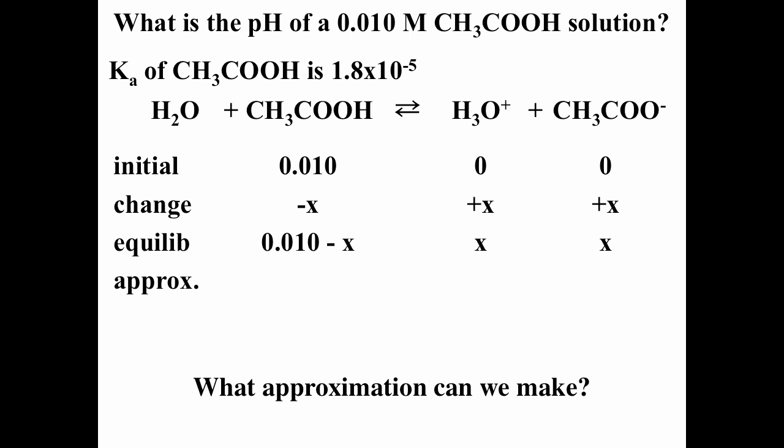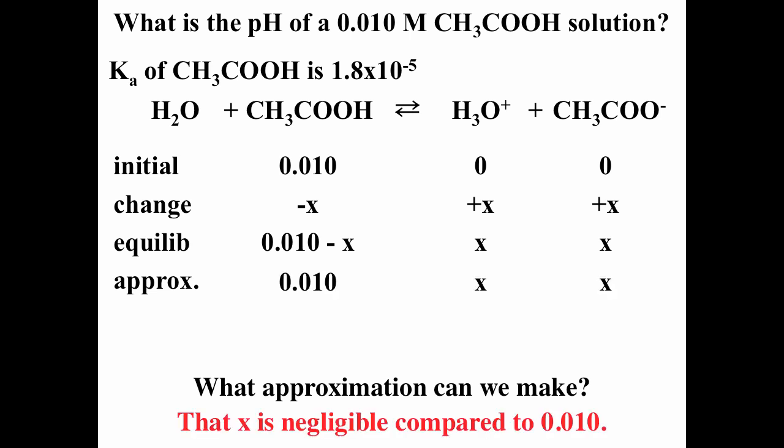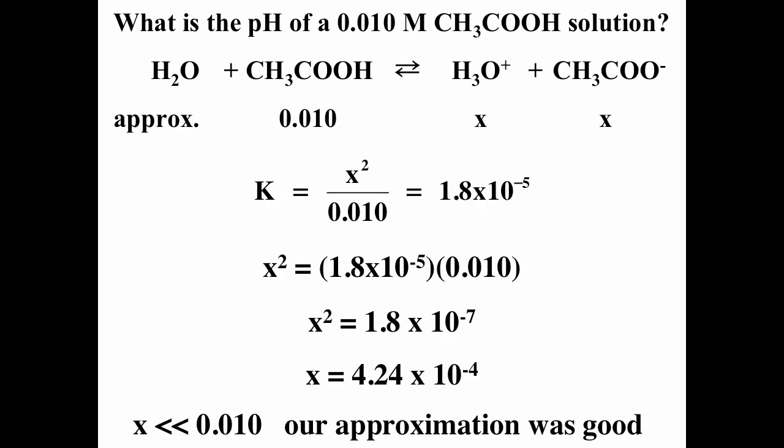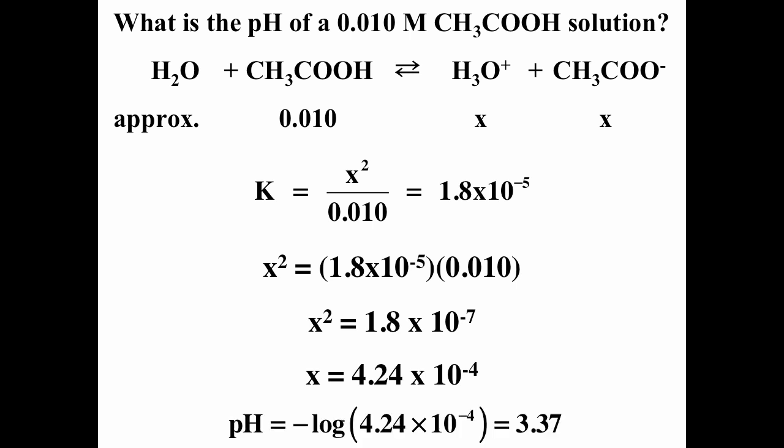We can assume X is negligible compared to 0.01. If we don't want to make that approximation, we could multiply out and solve using the quadratic equation, but the approximation makes the math faster. Our equilibrium expression is products over reactants: hydronium ion times acetate ion divided by acetic acid, giving X² / 0.01 = Ka. So X² = 0.01 × Ka, and taking the square root gives X = 4.24 × 10⁻⁴. At equilibrium, the hydronium ion concentration is X, so pH = −log(4.24 × 10⁻⁴) = 3.37.